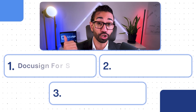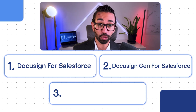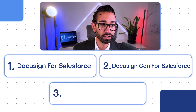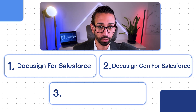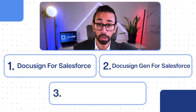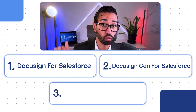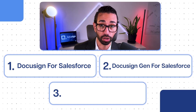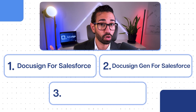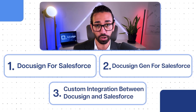The three types are DocuSign for Salesforce, DocGen for Salesforce — which is something that nobody seems to be talking about and it's so powerful. You can create the best, most polished and complex documents with it, so I really recommend you watch the portion of the video that talks about DocGen. And finally, the third one is a custom integration between DocuSign and Salesforce.